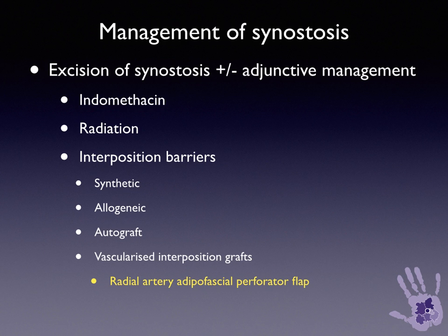Interposition barriers have shown some promise, but synthetic and allogeneic options carry risks of infection, and non-vascularized autografts including fascial grafts have the same problems. A vascularized interposition graft can be used via a perforator flap off the radial artery.